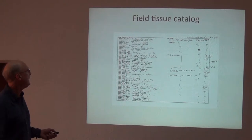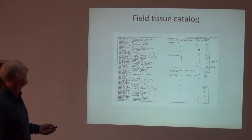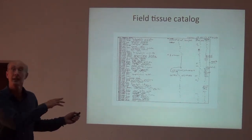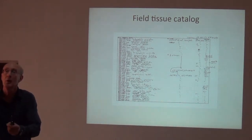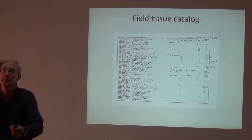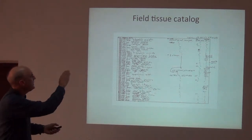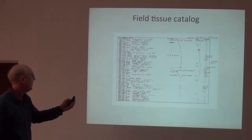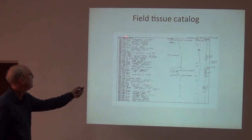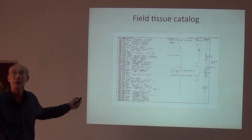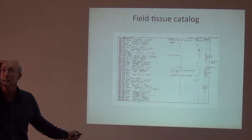Here's a field tissue catalog. This is yet another catalog — separate from the field prep catalog. On this, you have the person's prep number and the unique number that goes on that cryogenic tube.